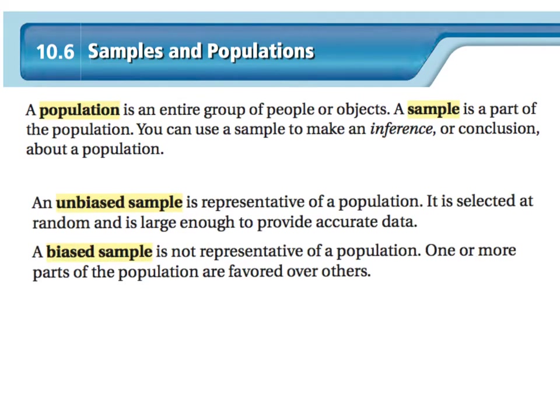An unbiased sample is a representative of a population. It is selected at random and is large enough to provide accurate data. A biased sample is not a representative of a population — one or more parts of a population are favored over others. A biased sample means you're trying to skew something because you're in favor of or against something.